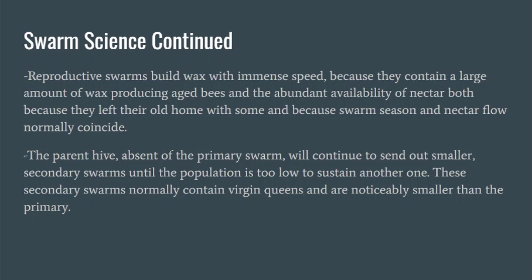The parent hive, absent of the primary swarm, will continue to send out smaller secondary swarms until the population is too low to sustain another one. These secondary swarms are usually much smaller and contain a virgin queen or multiple virgin queens. If you don't get in there after that primary swarm, you risk losing a ton of bees and coming back to find almost nothing in the hive. Paying attention during swarm season is critical, even after that primary swarm leaves.